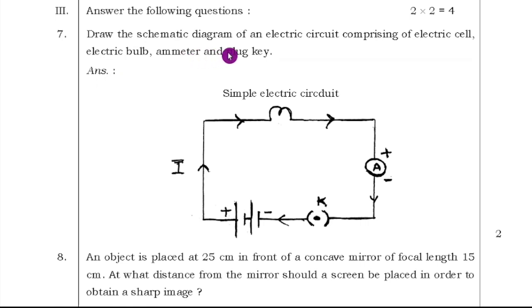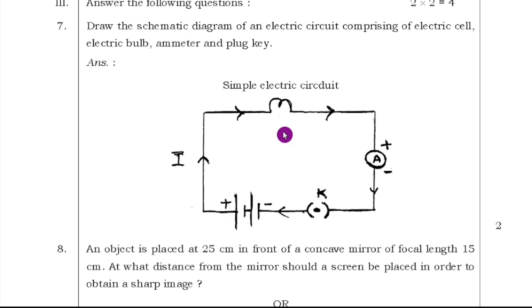Draw the schematic diagram of an electric circuit comprising of electric cell, electric bulb, ammeter and plug key. These circuit diagrams is very important because they will ask simple circuit diagram or parallel series, parallel circuit diagram or series circuit diagram or Ohm's law. Based on the Ohm's law also, you have one more circuit diagram. These four circuit diagrams compulsory, you have to learn. Out of four, anyone, they will ask.